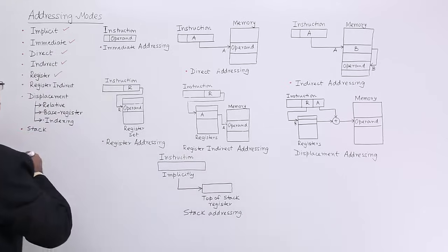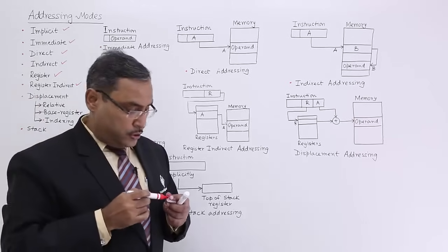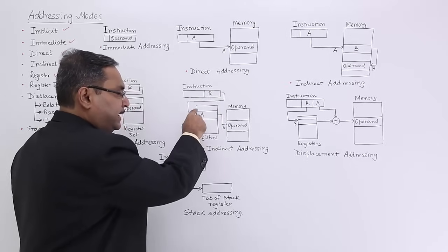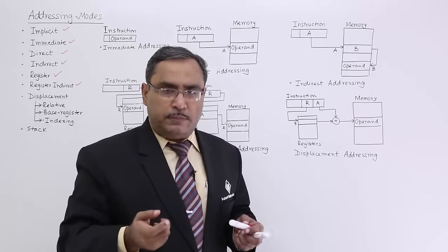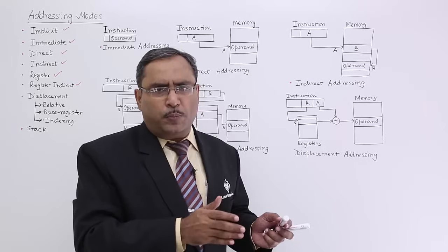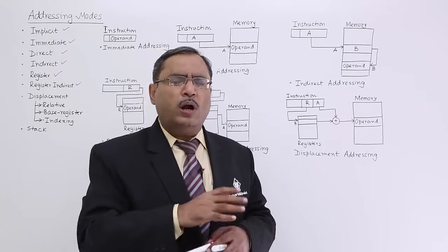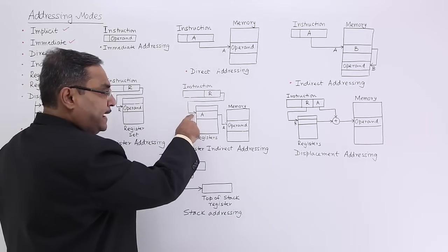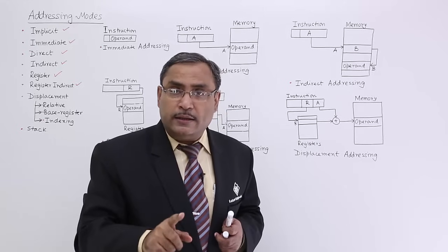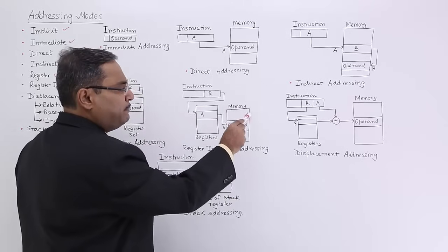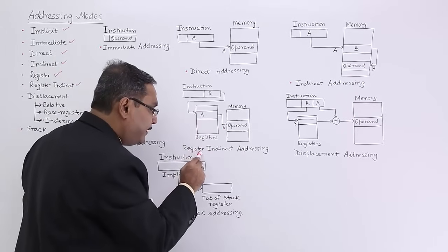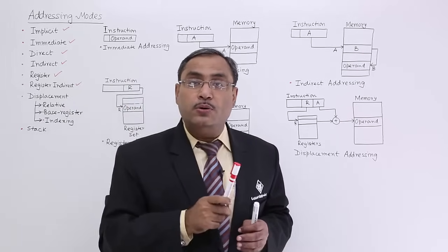Register indirect addressing mode means the instruction contains the opcode and a register name. Going to that register in the register set — such as R1, R2, R3, or AX, BX, CX, DX, or EAX, EBX in other microprocessors — the register does not contain the operand itself. Instead, the register contains the address of the operand, which is then mapped onto memory to access the data. That is why it is called register indirect addressing, similar to the Mr. Dotto and Mr. Alam example.